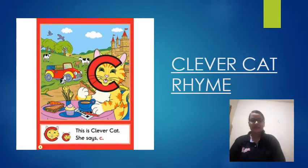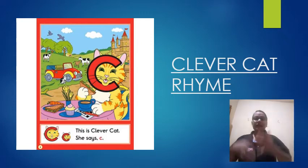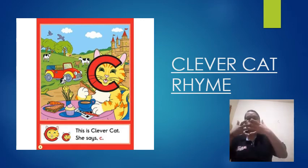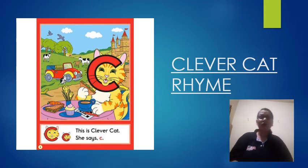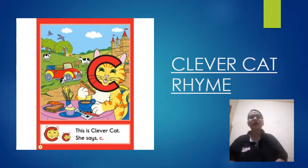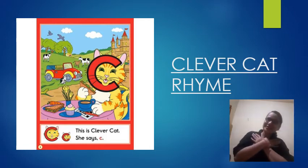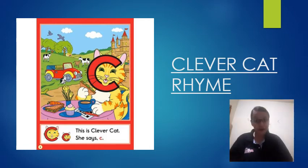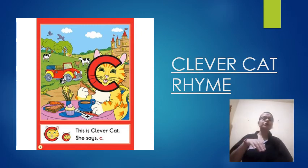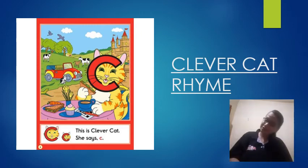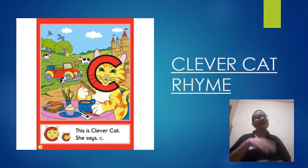Children, let us recite the Clever Cat rhyme. Clever Cat says 'k', 'k', 'k'. Clever Cat says 'k' and cuddles close to me. She also makes another sound, another sound, another sound. She also makes another sound — you wait and see.